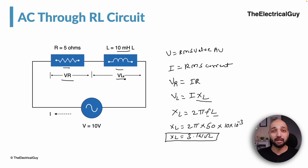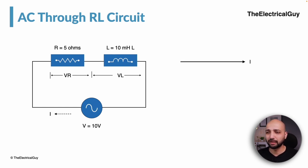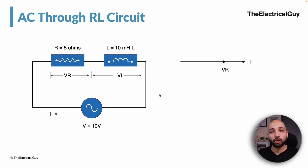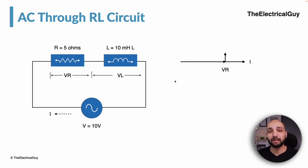Now let us understand the phasor diagram, which is really interesting. We take current as a reference, so the current phasor is drawn along the reference axis. In a resistive circuit, current and voltage are perfectly in phase, so the voltage drop across the resistance VR is also in phase with the circuit current. For the inductor, voltage leads the current by 90 degrees, so the voltage drop across the inductor VL is out of phase with current by 90 degrees.